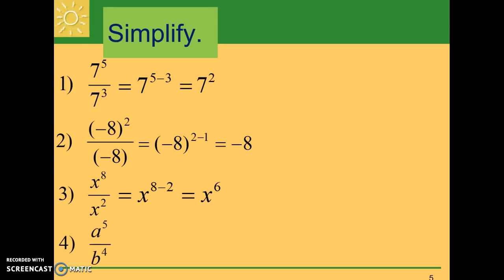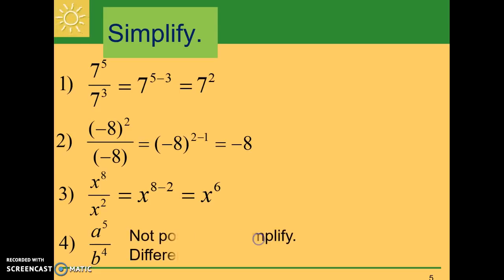The last problem: we have a to the fifth over b to the fourth, which means a is multiplied by itself five times in the numerator and b multiplied by itself four times in the denominator. There is nothing the same at the top and the bottom, so we can't cancel anything. It is not possible to simplify because we have different bases — every time you have different bases, you can't simplify using exponents.